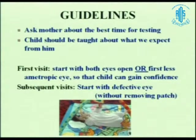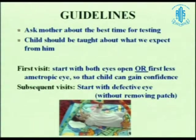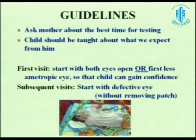The moment you occlude one eye, the kid feels threatened and resists, closing both eyes. So start by making him comfortable. Start with both eyes open or start with the non-squinting, fixing eye. This changes on subsequent visits. When you have started patching for amblyopia or strabismus, you have to start with the defective eye first before removing the patch — because with the same Snellen's chart, the kid reads with the better eye and remembers the whole chart completely. Do not underestimate him. He remembers the whole chart right to left and left to right. So start with the defective eye first on subsequent visits.